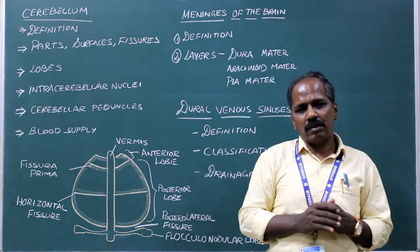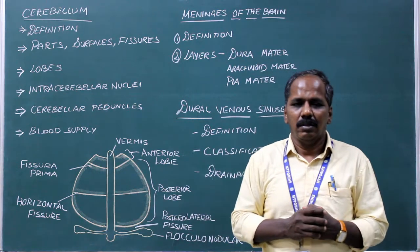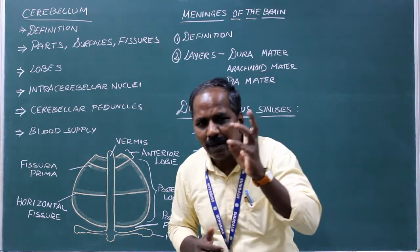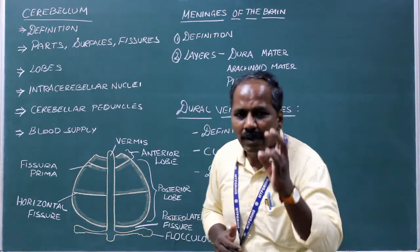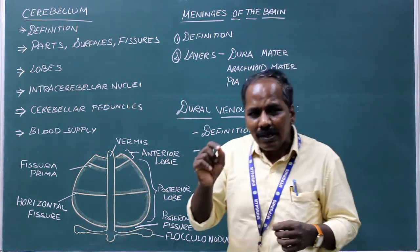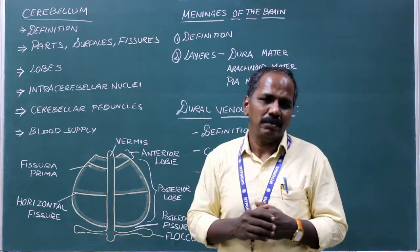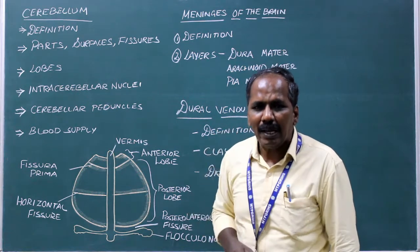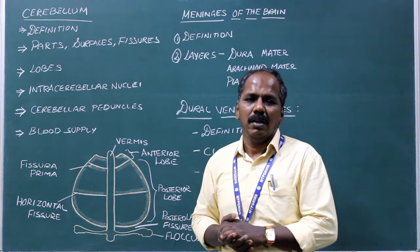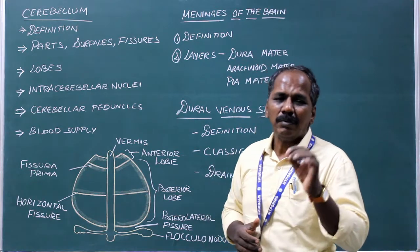Cerebellar peduncles — peduncles means bundles of fibers. The cerebellum has three cerebellar peduncles: number one, superior cerebellar peduncle, which connects the cerebellum with the midbrain; number two, middle cerebellar peduncle, which connects the cerebellum with the pons; number three, inferior cerebellar peduncle, which connects the cerebellum with the medulla oblongata.